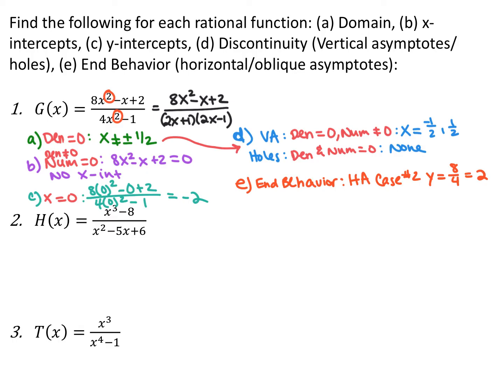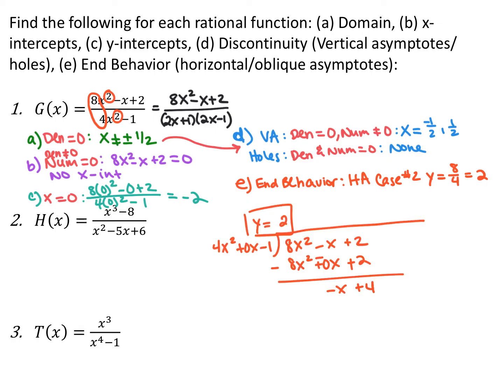For end behavior of g(x), this is a case 2 problem where the degree of the numerator equals the degree of the denominator. I divide the leading coefficients: 8 divided by 4 gives a horizontal asymptote at y equals 2. You could also verify this with long division—whatever quotient you get excluding the remainder is your end behavior, which is y equals 2.